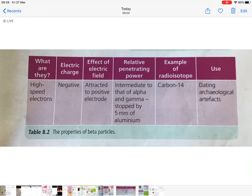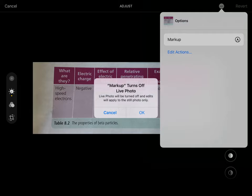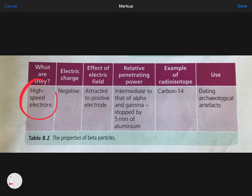Look at the properties of beta. Don't say what they are. They are high-speed electrons. They are negatively charged because electrons are negatively charged. They are attracted to the positive electrode. They have an intermediate penetration power. An example would be carbon-14 and their use is dating archaeological artifacts, the carbon-14 dating.